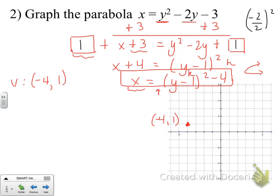I'll label the vertex on the graph. With parabolas that open horizontally, we don't build a table picking x values — since x is isolated in our equation, we're actually solving for that variable. So we pick y values instead. Looking at the vertex, the y value is 1, so I want to pick y values above or below that. I'll pick the two above — y equals 2 and y equals 3 — since they're both positive. My table is a little bit backwards this time.